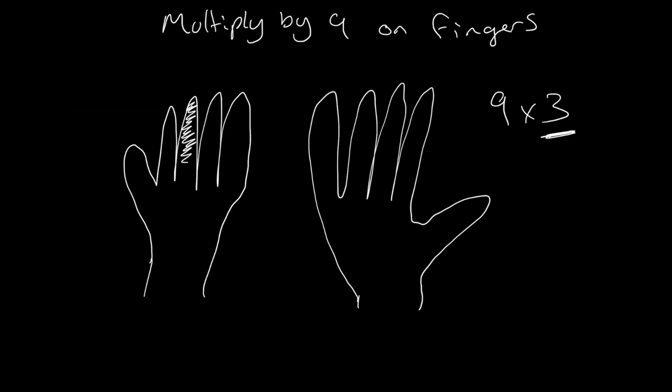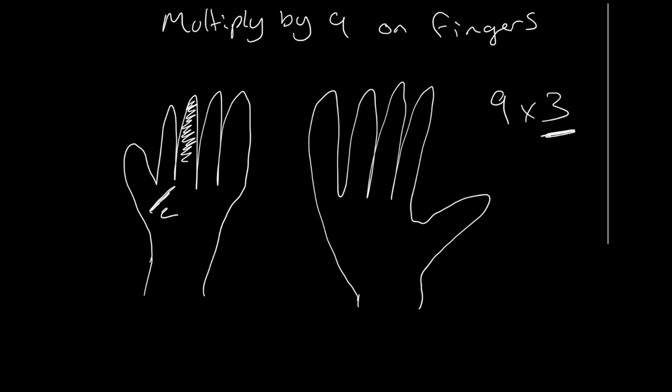Then the trick is that you take the digits that are left on the left hand side, which is 2, and you take the digits that are left on the right hand side, which would be 7. Your answer is then 2 followed by 7, which is 27.